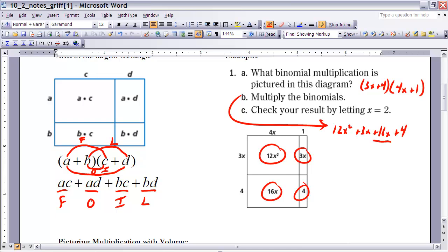And then we would want to combine our like terms. 3x and 16x are like terms. Therefore, we can write that as 12x squared plus 19x plus 4. So this would represent the area of that rectangle.